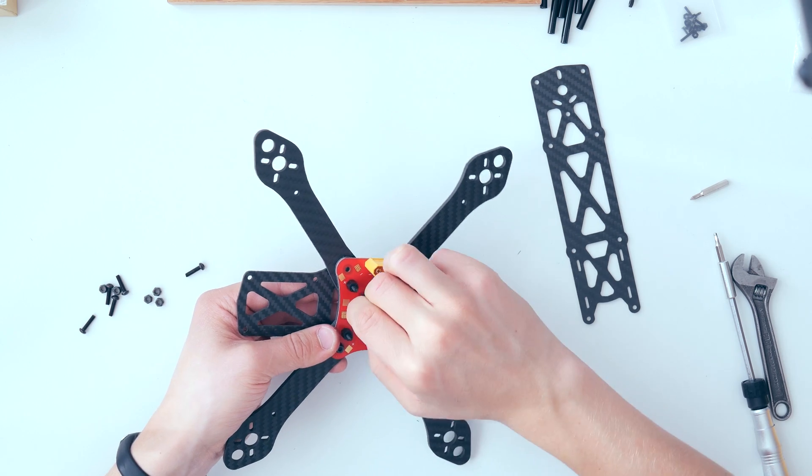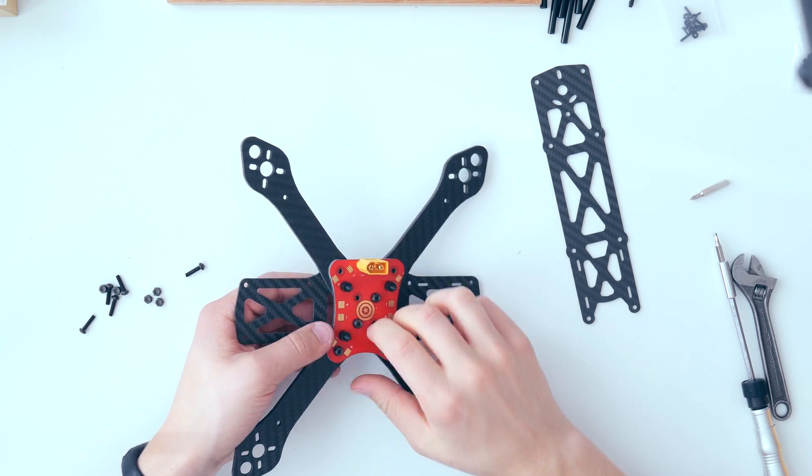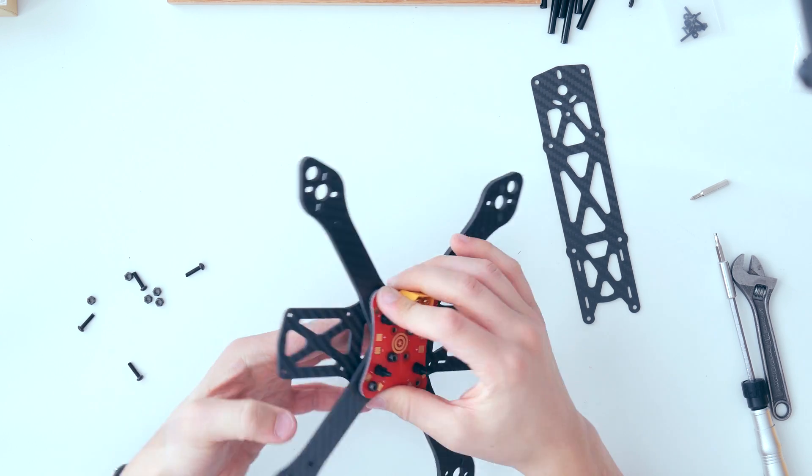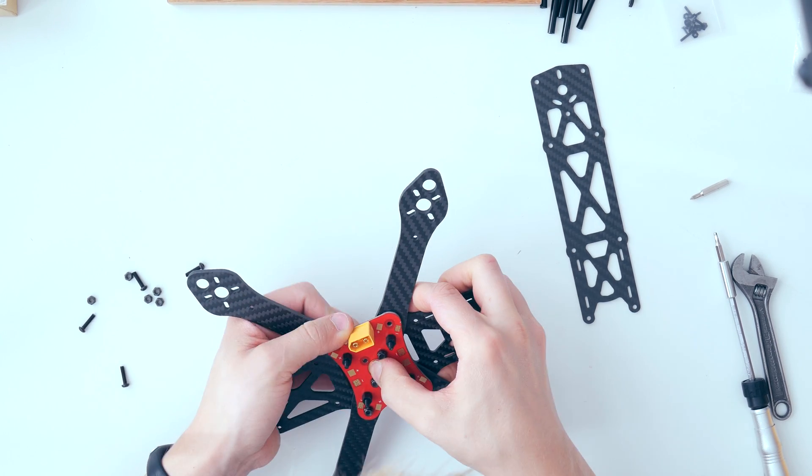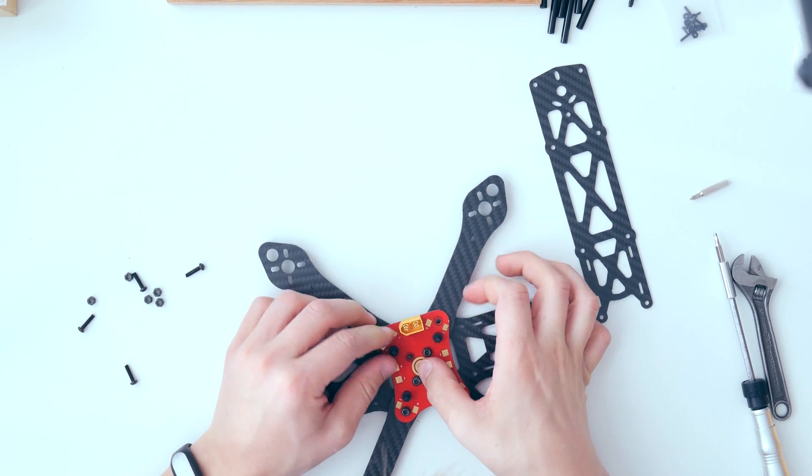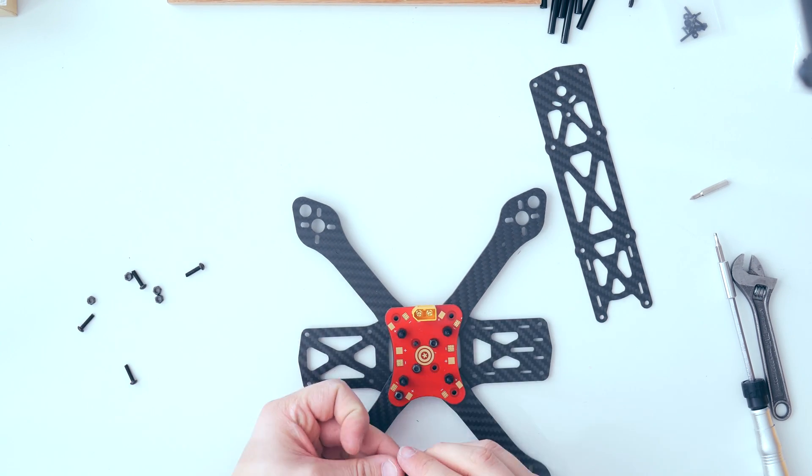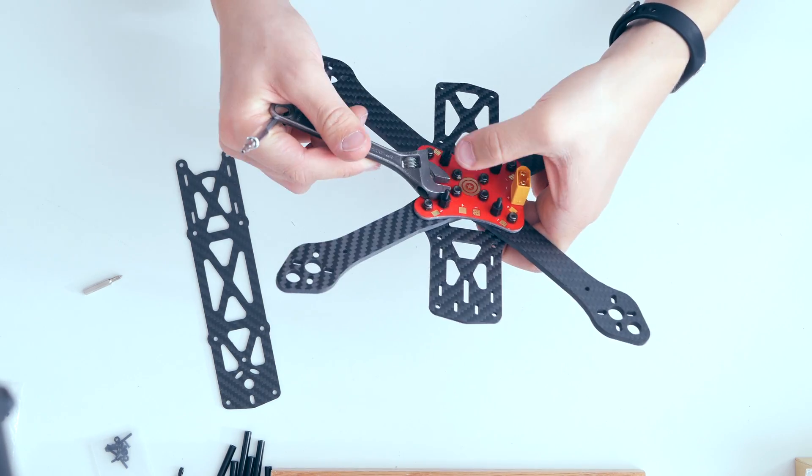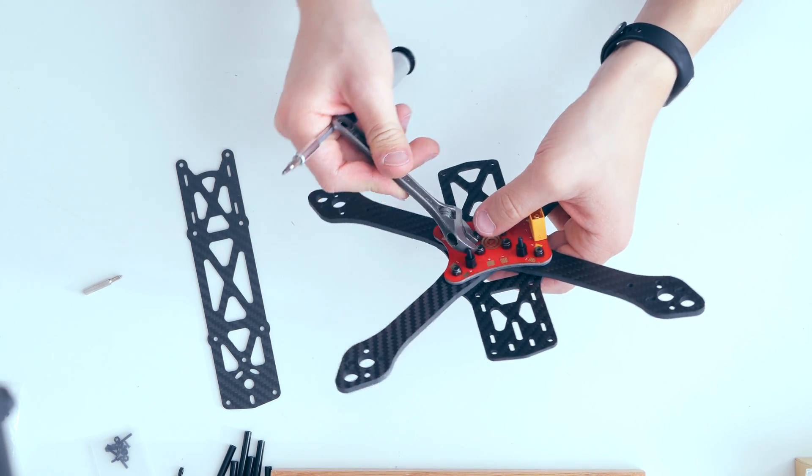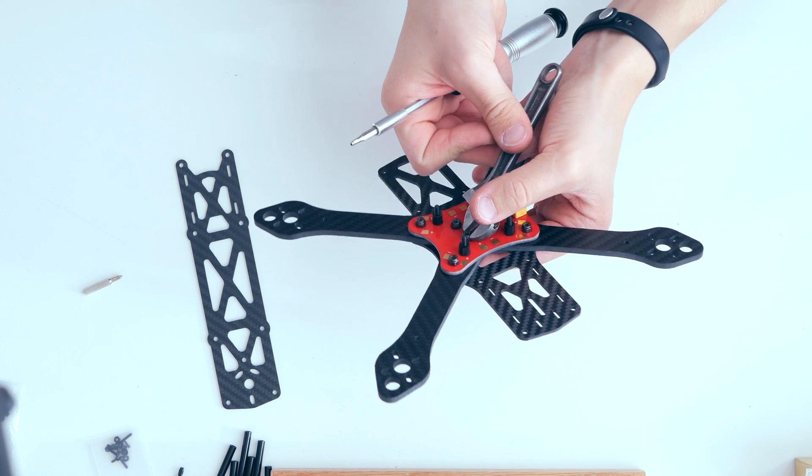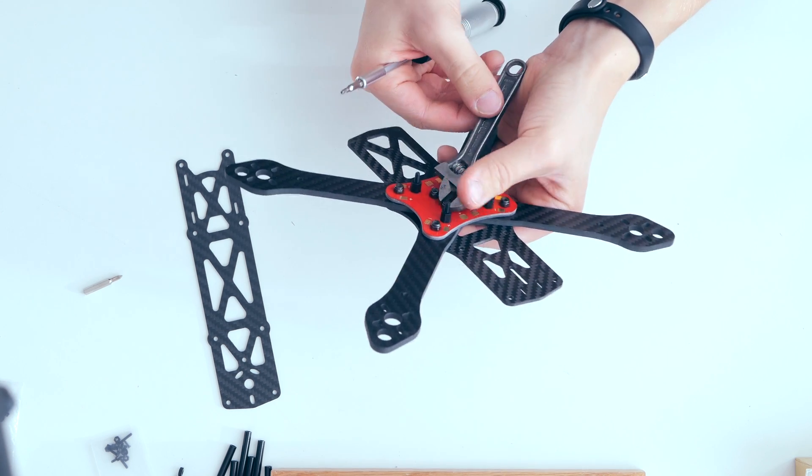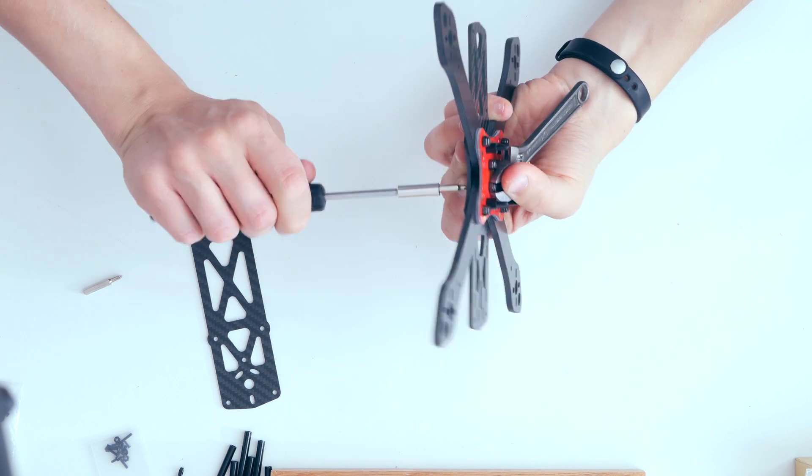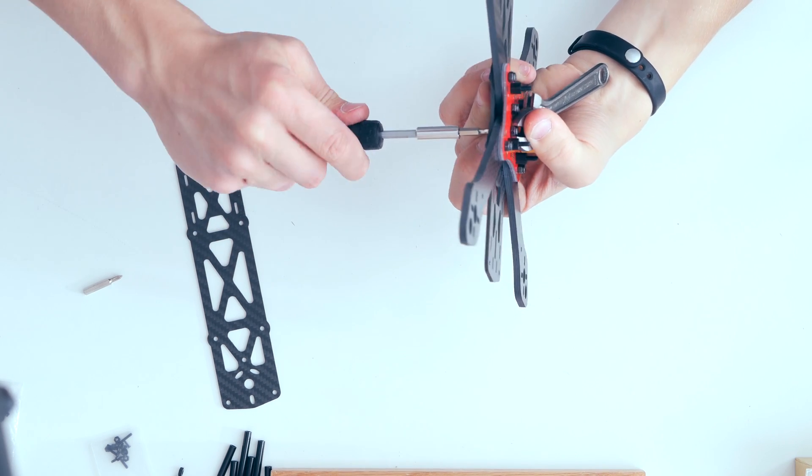I start by assembling the bottom half of the frame. This should always be the first step when building a race quad. This will be the ground for everything else later on. This step is really simple, I just follow the instructions that came with the frame. Make sure to add Loctite to all the screws that don't have nylock bolts. Otherwise, they will most likely fall off during flight. On the screws I'm attaching now, I don't really need to worry about that because all of these screws are attached with nylock bolts.